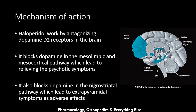Regarding the mechanism of action, haloperidol works by antagonizing the dopamine D2 receptors in the brain, blocking dopamine in the dopaminergic pathways. These include the mesolimbic and mesocortical pathways, which leads to relieving of psychotic symptoms. The mesolimbic pathway connects the ventral tegmental area with the nucleus accumbens, and the mesocortical pathway connects the ventral tegmental area with the frontal lobe. Haloperidol inhibits dopamine in both of these pathways to produce relief of psychotic symptoms.